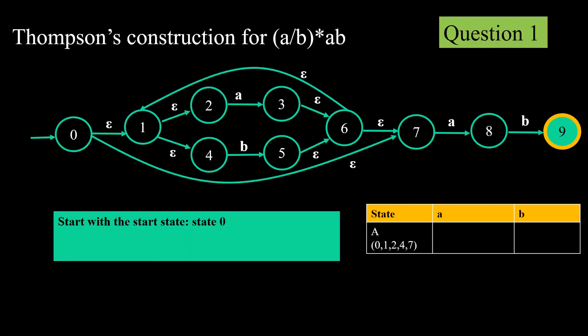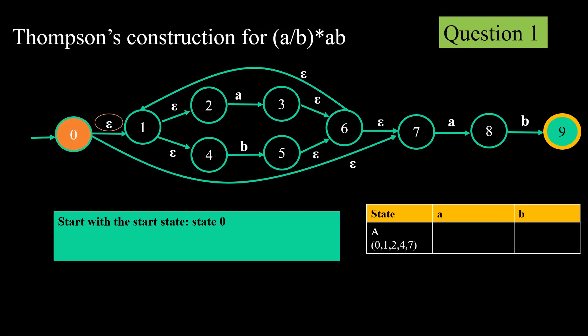Now let's start with the construction for (a or b)* a b. This is the original regular expression. In Thompson's construction, this is the NFA we get corresponding to (a|b)*ab. As we can see there is an OR and a star, so there will be eight epsilon moves. Now let's start with the start state. We start with the eClosure function — eClosure of zero. eClosure of zero will include all states which can be traversed only on epsilon moves from start state zero. I have highlighted all the parts which will be covered from state zero on epsilon moves only.